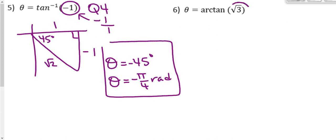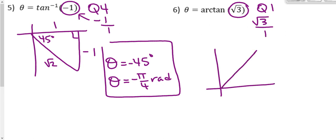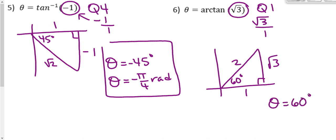Arc tangent of square root 3. Square root 3 is positive, so we're in quadrant 1. We can write it as the ratio square root 3 over 1. Draw the reference triangle: opposite is square root 3 and adjacent is 1. We recognize that as a 30-60-90 triangle with a 60 degree reference angle. So theta is 60 degrees, or pi over 3 radians.